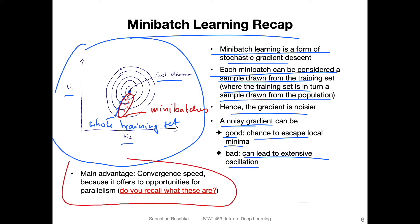Before we talk about that, another advantage of mini batch learning is convergence speed. Compared to regular stochastic gradient descent where we only have one training example per update, mini batch gradient descent is actually faster. It can also be faster than doing updates on the whole training set. If you don't recall why, we covered this in an earlier lecture — but it might be a good idea to think about why mini batch gradient descent is faster than both SGD with one example and full-batch gradient descent.